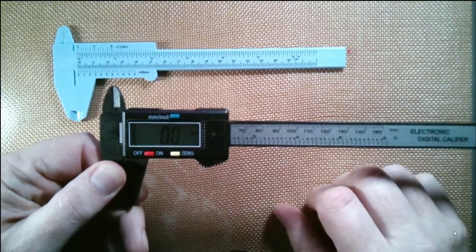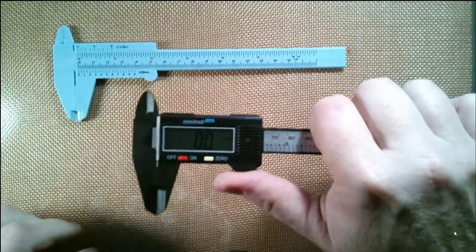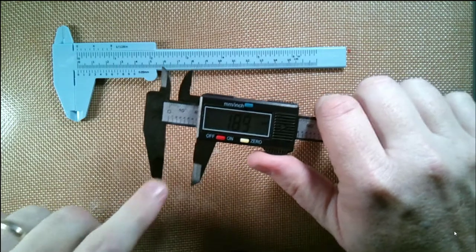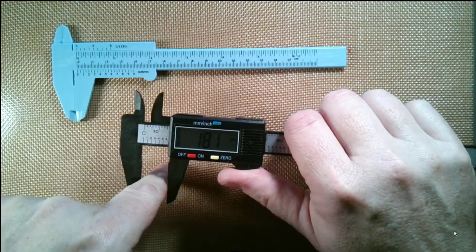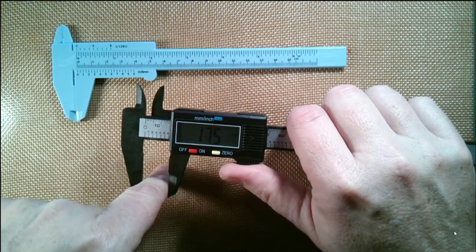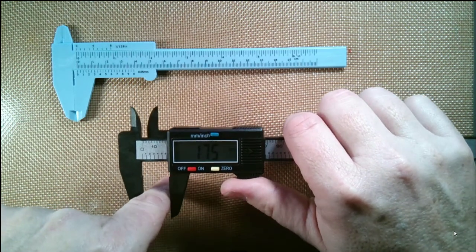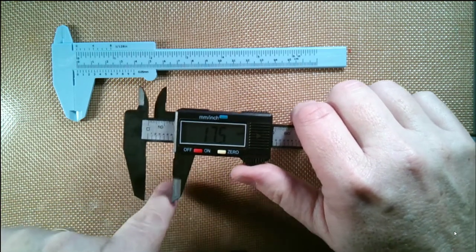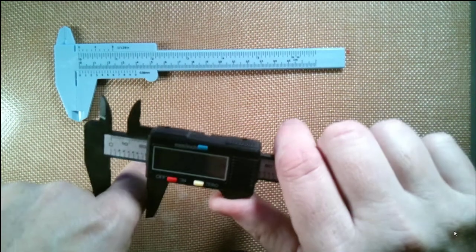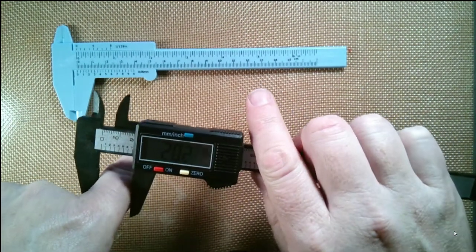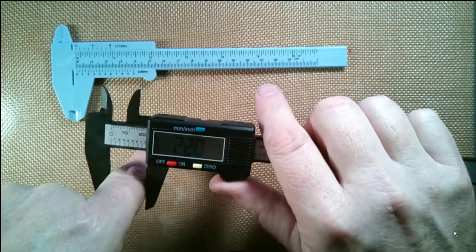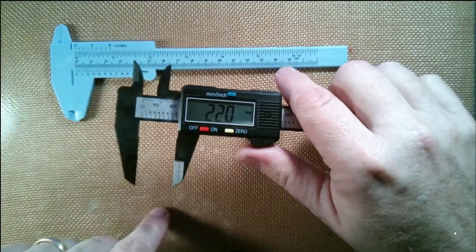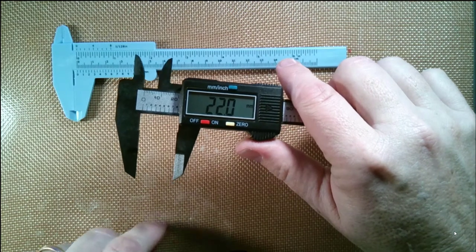You've got basically three different ways you can measure things. The most obvious is you can put these jaws around something and measure it. For example, to design a ring in Tinkercad for yourself, you could put this around your finger where you'd want the ring to go, probably at the widest part of your finger. In this case, that's 22.0 millimeters.